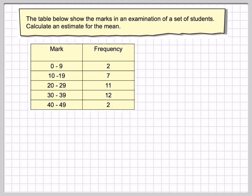Here we've got some data. The marks have been grouped between 0 and 9, 10 and 19, 20 and 29, 30 and 39, 40 and 49, and the frequencies of these are 2, 7, 11, 12, and 2.